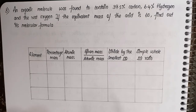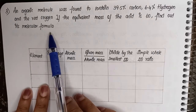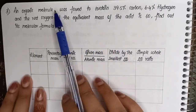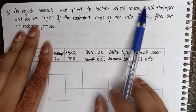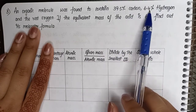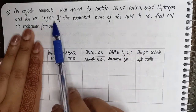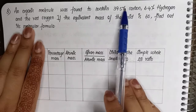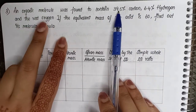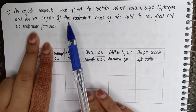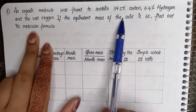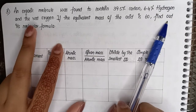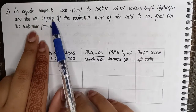Students, this is another question where we are going to talk about how to calculate molecular formula from given data. An organic molecule was found to contain 39.5% carbon, 6.4% hydrogen, and the rest is oxygen. We are given three elements — carbon, hydrogen, and oxygen. Carbon and hydrogen percentages are given; oxygen is not given, so we need to find that out first. The equivalent mass of the acid is 60. Find out its molecular formula.